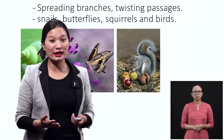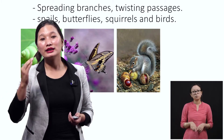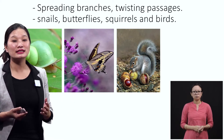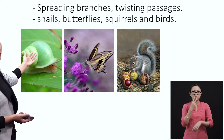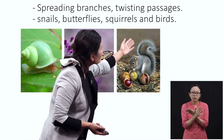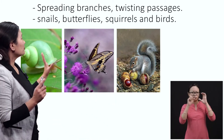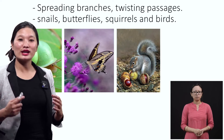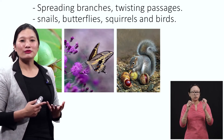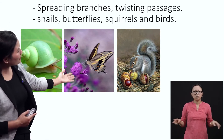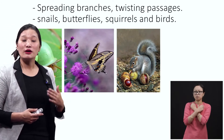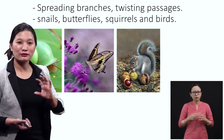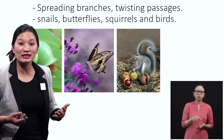The young boy is your age, so he would love to move to different branches and watch things. There are other creatures that make it more exciting — he can see snails, butterflies, and squirrels. Looking at the pictures here: a snail, a butterfly, and a squirrel with nuts. The boy loves seeing all these creatures that come to the banyan tree.